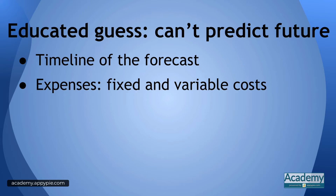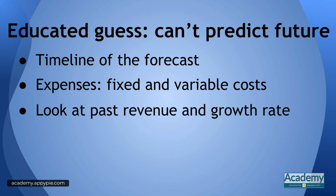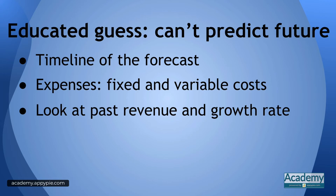Once you've counted down your fixed and variable costs, you want to make a prediction of revenue. First and foremost, look at your past revenue and growth rate. If you've been growing at 20% a month or a year, that's your baseline projection.